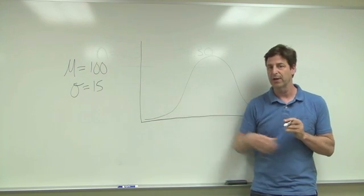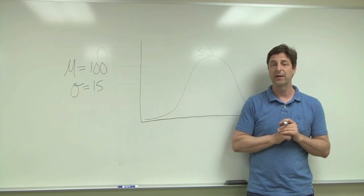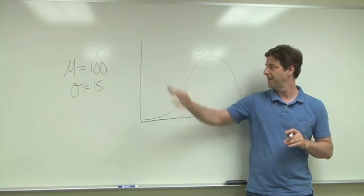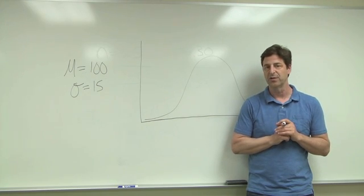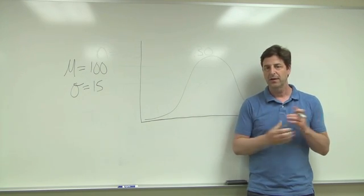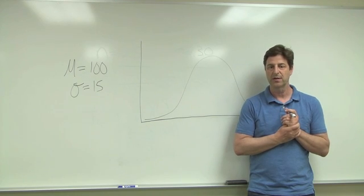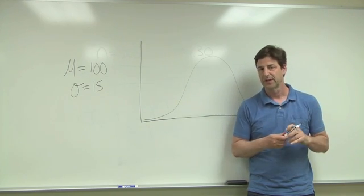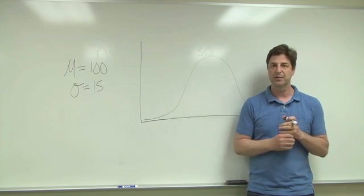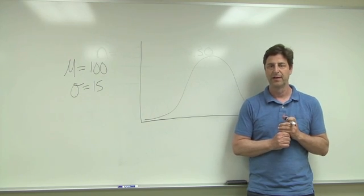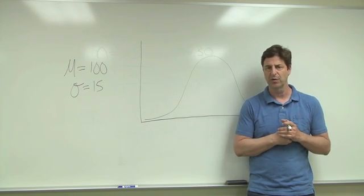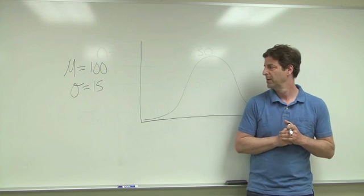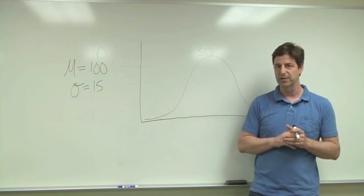So suppose that we are talking about IQ test scores, and in the population the average IQ score is 100, with a standard deviation of 15. The question that you might want to answer is something like: suppose that my son has an IQ score of 105 — what's his z-score, what is his standardized score? So to calculate that, you just use the z-score formula.